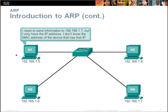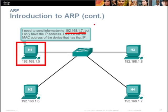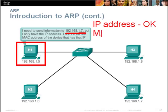Let's look at this diagram. We have a source computer H1 trying to send a data packet to destination 192.168.1.7. H1 only knows the IP address of the destination but does not know its MAC address, so it is unable to send to the destination. It needs to find out the MAC address before it can proceed.